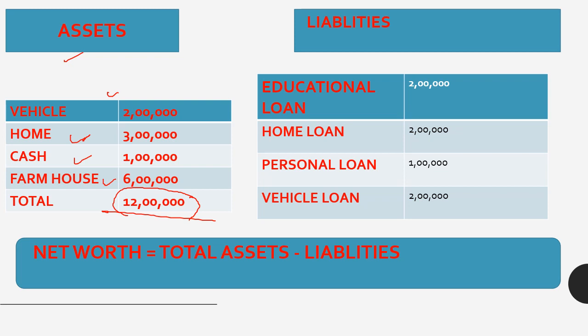Now we come to liabilities. What are liabilities? After studying, you got a good job. You bought a vehicle, a home — and for all of these you took loans. So you have a home loan, a farmhouse loan, a personal loan, and an education loan.